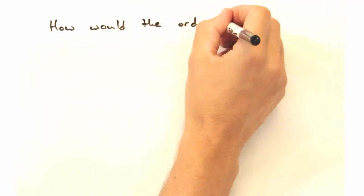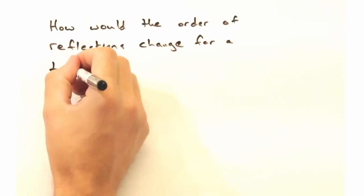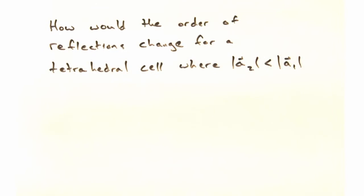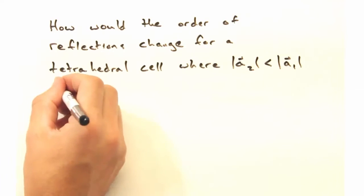But let's try something not as simple as a square. Instead, how would the order of reflections change for a tetragonal cell where the A2 axis is slightly shorter than the magnitude of A1?